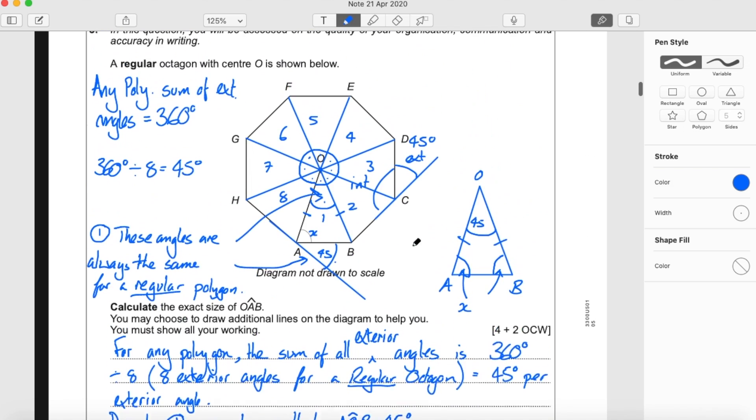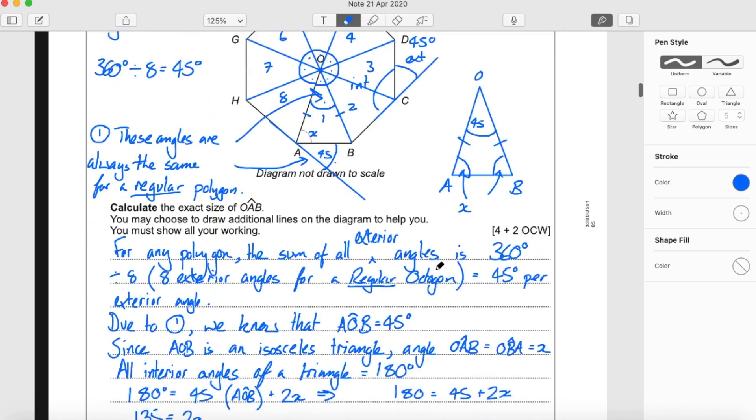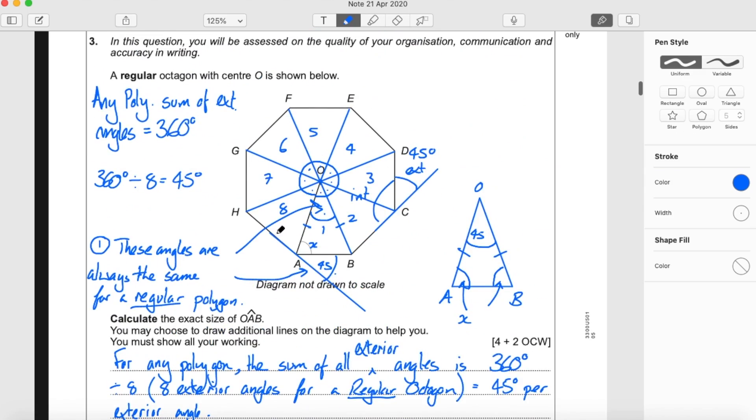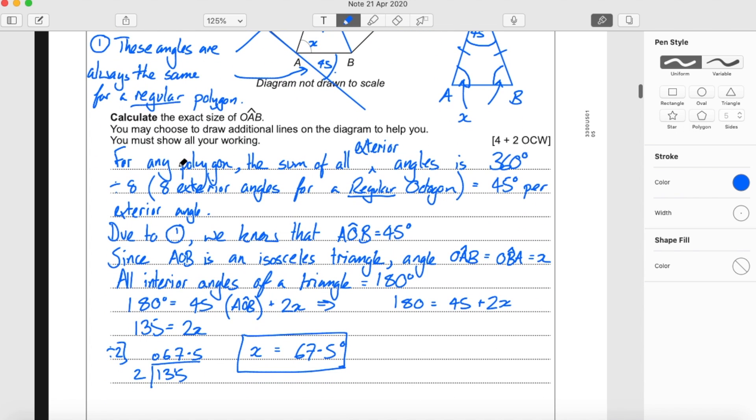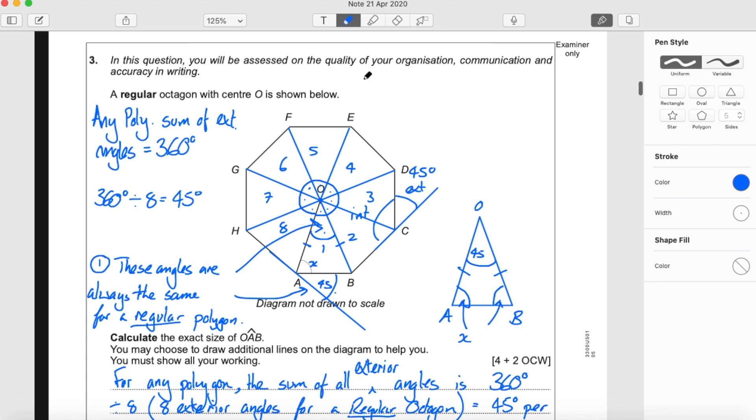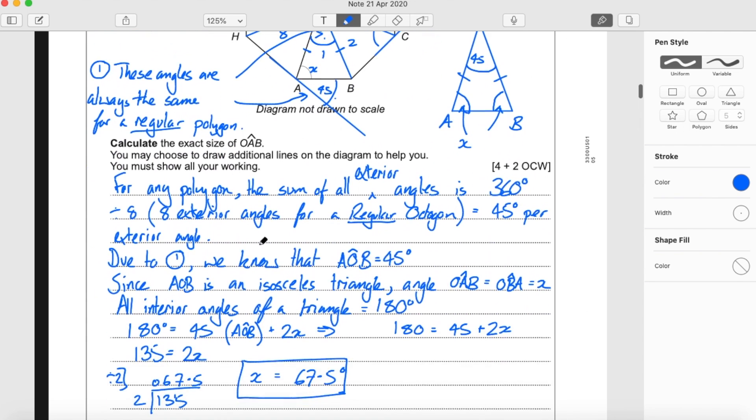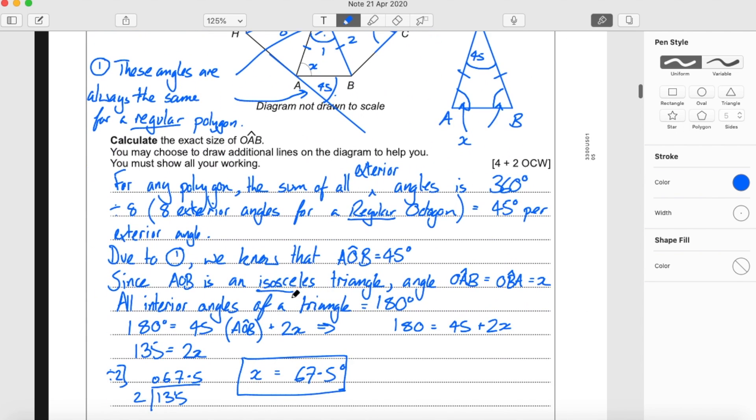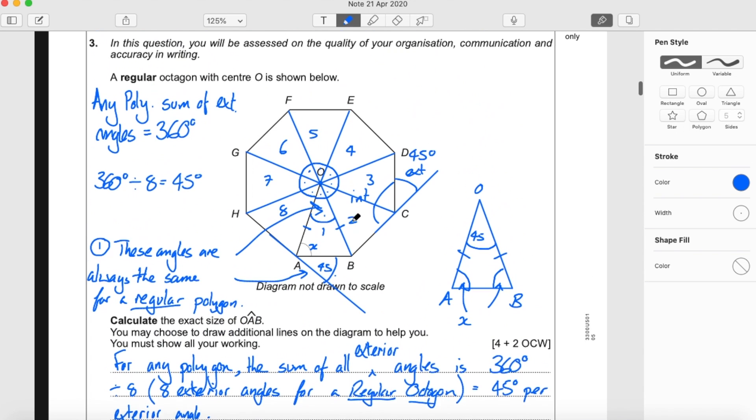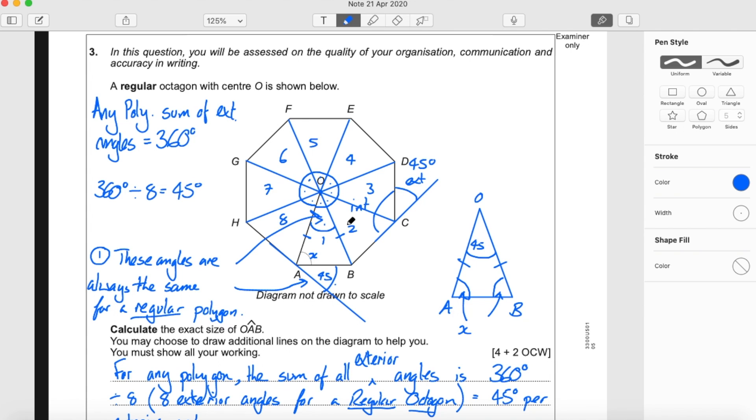So there's the answer to question 3. We've done the working and written our answer out. So we've displayed organisation, communication and accuracy since we've got our spellings correct, isosceles and octagon. So that should get you all the marks for question 3.